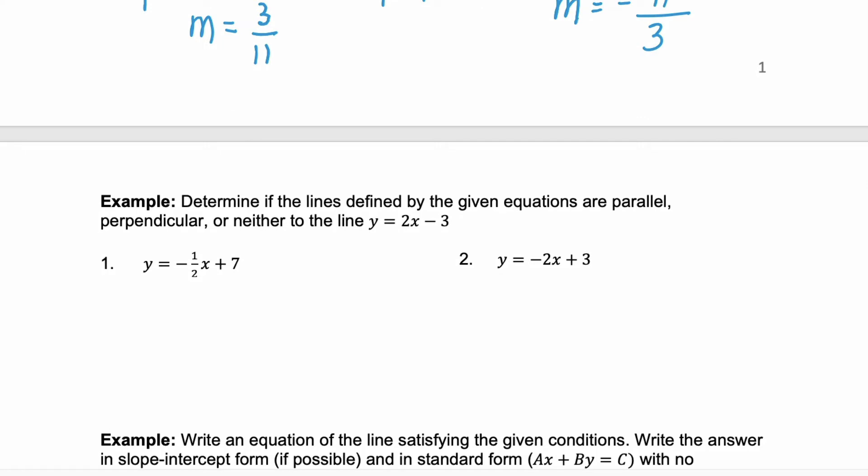Knowing what the slopes look like for parallel and perpendicular lines is important because you could be given equations of lines like this example and you need to determine if they're parallel or perpendicular or neither. And to do that we only need to look at the slope of each. So our first line is y equals 2x minus 3. We only care about the slope here. The slope of this line is 2.